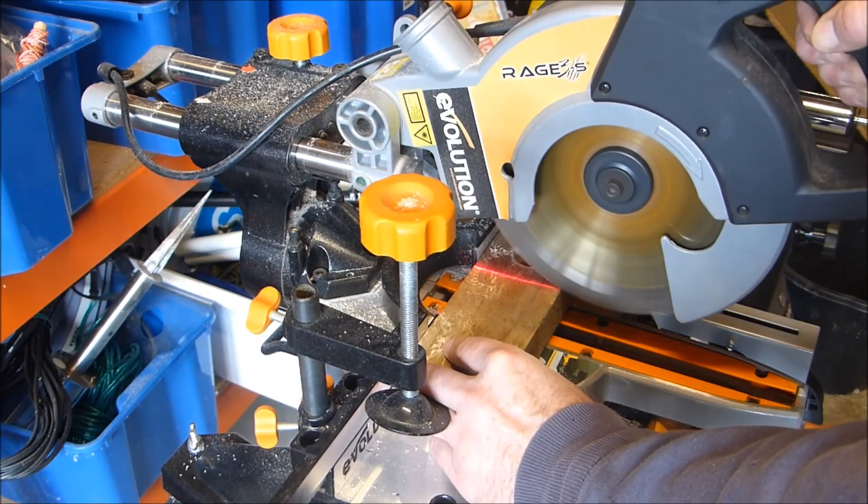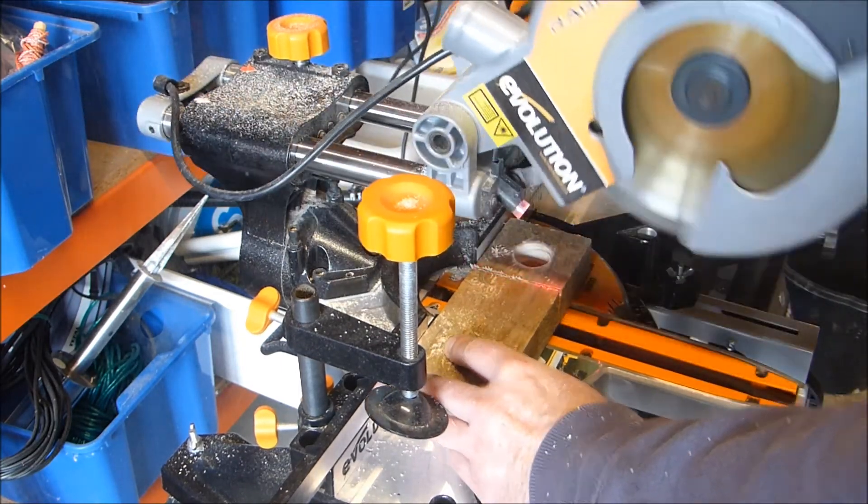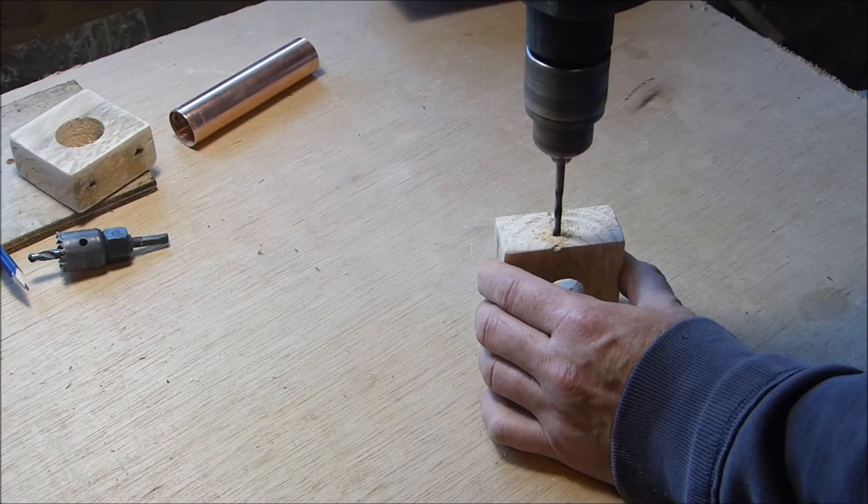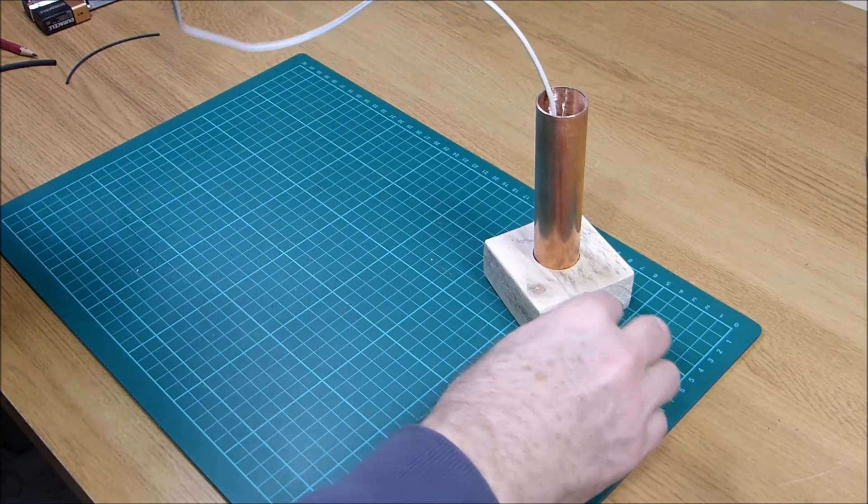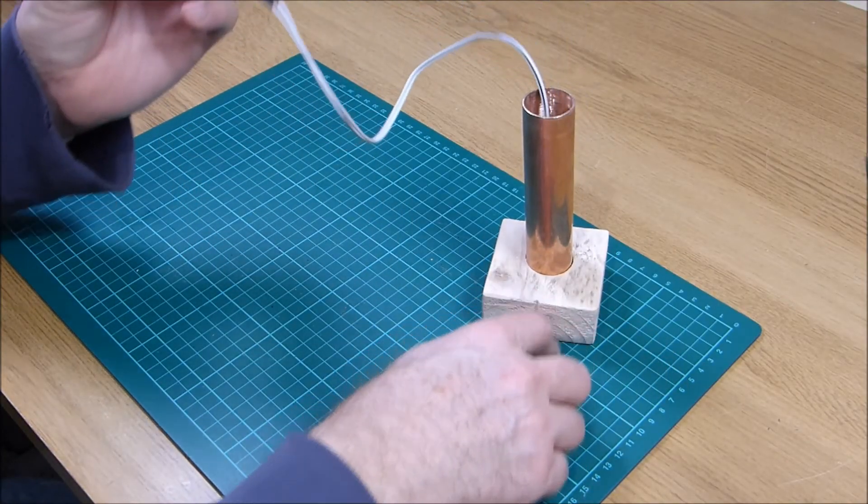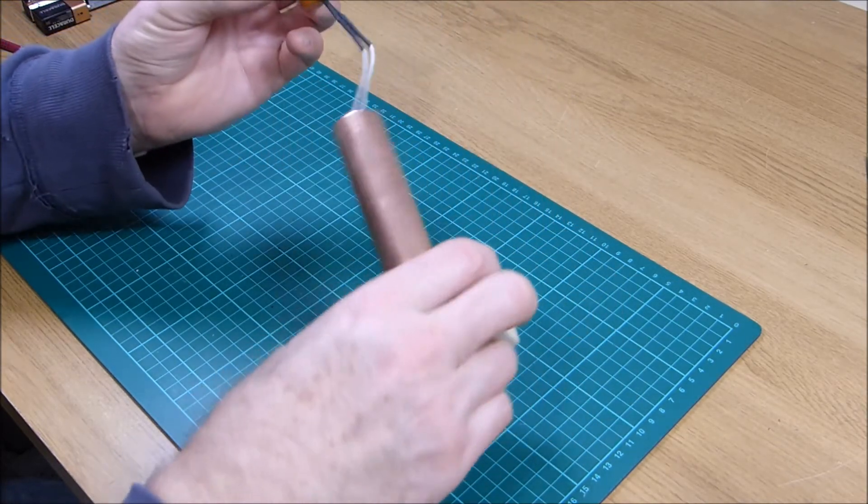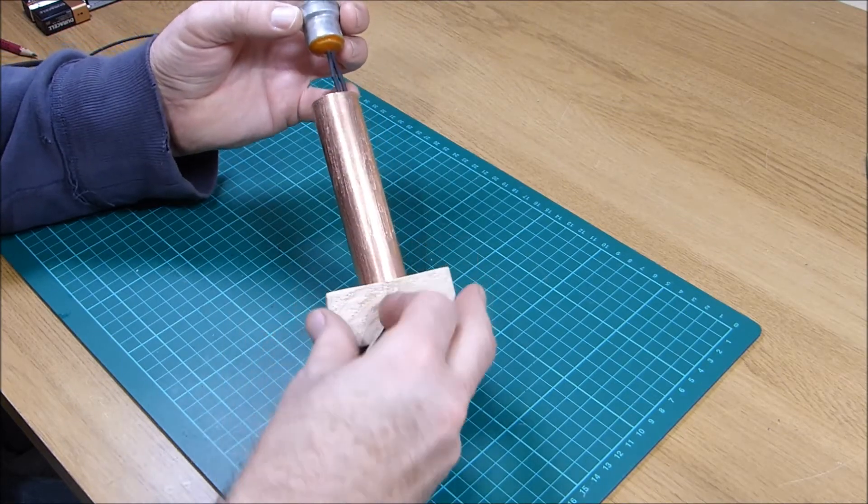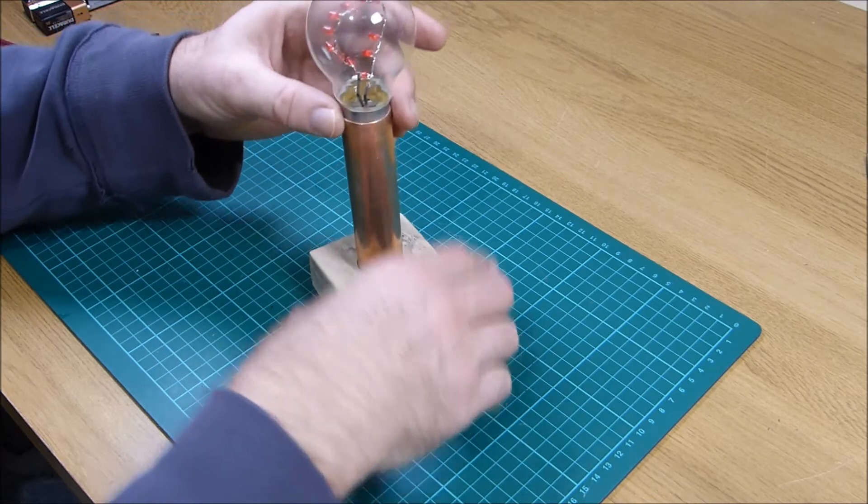I cut the wood to size and sanded it. Drilled a hole for the cable. Threaded the cable through the copper pipe and the wooden base, and then pushed the base of the bulb into the copper pipe.